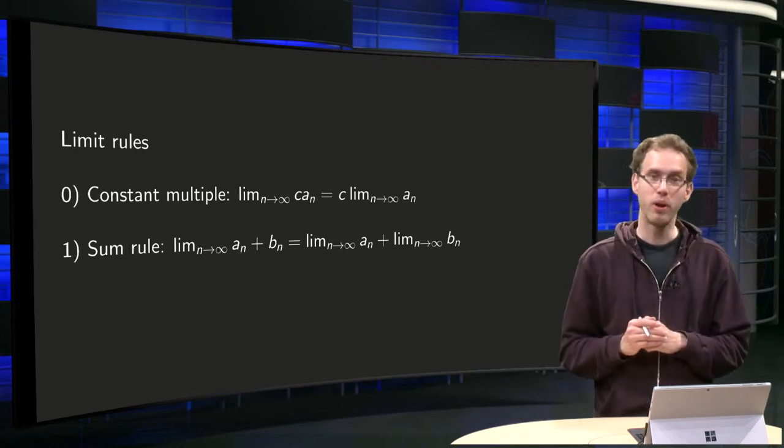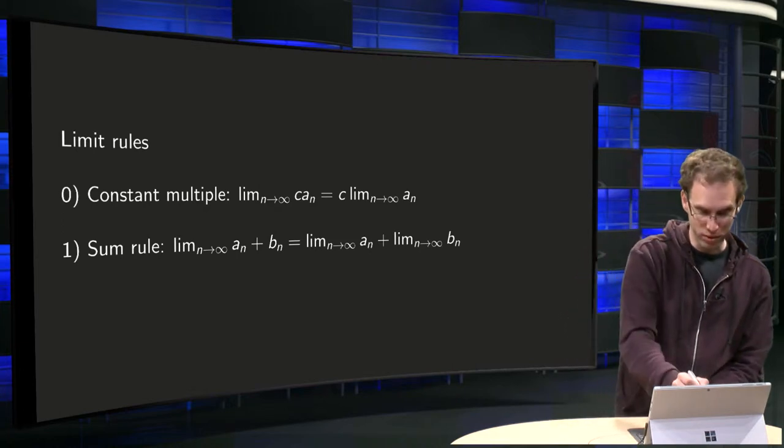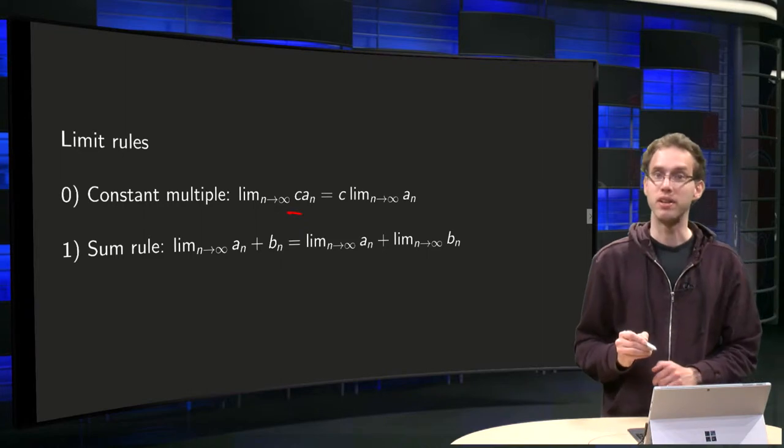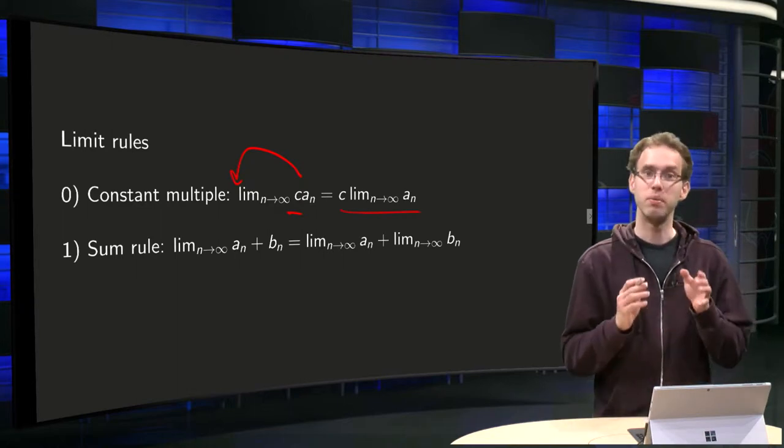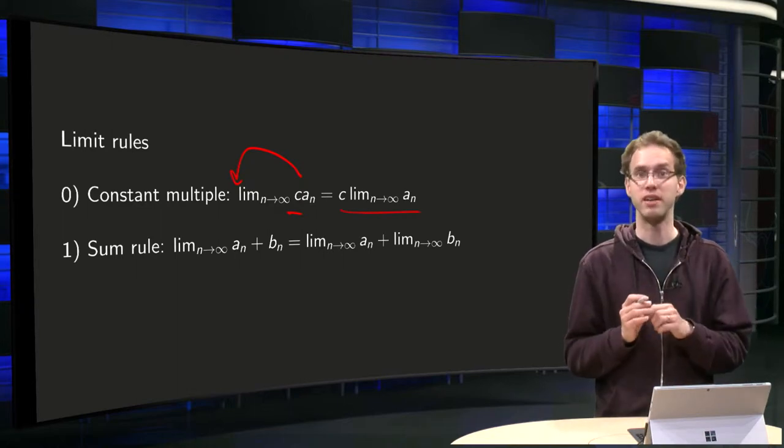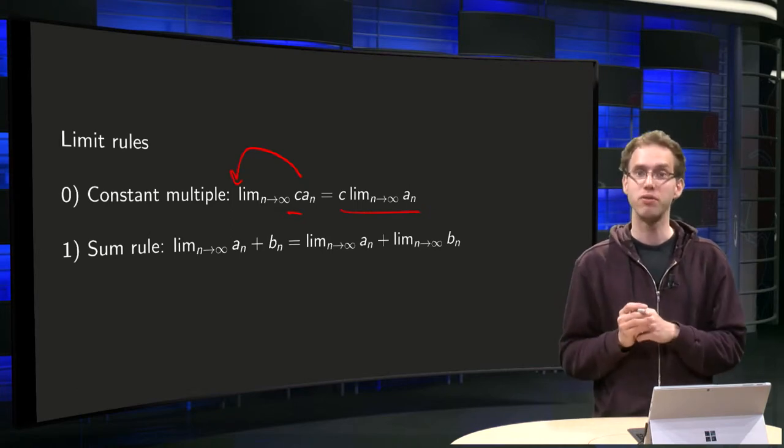First of all, we have our zeroth rule about constant multiples. If you have a constant c, you can take it out of the limit and take it in front. And we get the limit n to infinity of c times an, take the c in front, equals c times the limit n to infinity of an.